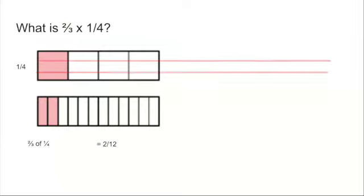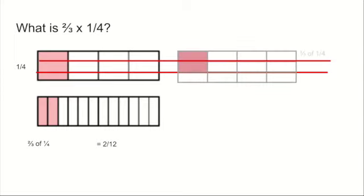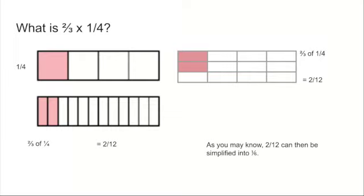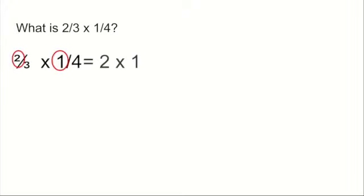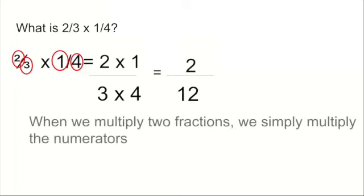We can also do that using horizontal lines — split it into three pieces and take two of them. It looks different, but it's the same fraction of the amount. Two thirds of one quarter is two twelfths, and we can simplify that. Using the written method: identify the numerators, multiply them together; identify the denominators, multiply them together. Two times one is two, three times four is twelve. Again, we can simplify that.